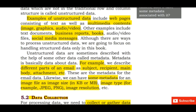Other examples of unstructured data include different parts of an email such as subject, recipient, main body, and attachment. Image files also vary — image size can be in kilobytes or megabytes, image type can be JPEG or PNG, and images can be of different resolutions.